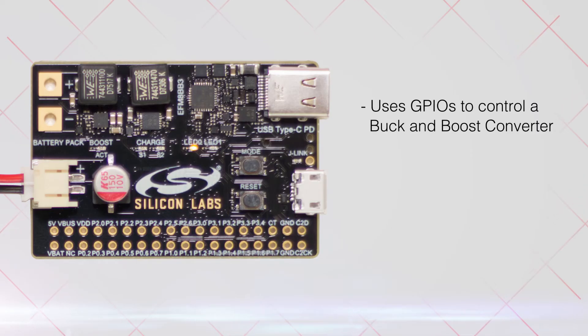The PD controller uses GPIOs to control a buck and a boost converter. It can also be configured to use I2C to control a power IC.